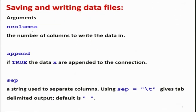So in summary, for the write function: we control the number of columns using ncolumns, control the data append behavior using true or false, and control the delimiter between different column values. For example, using a tab delimiter gives tab-delimited output where every value is separated by a tab.